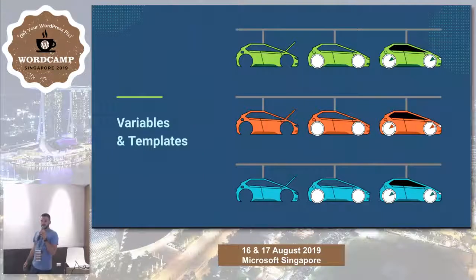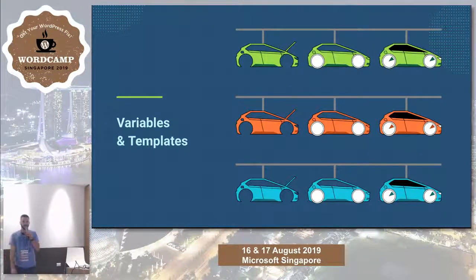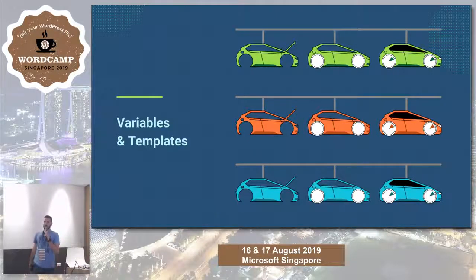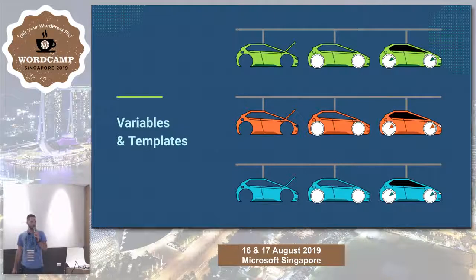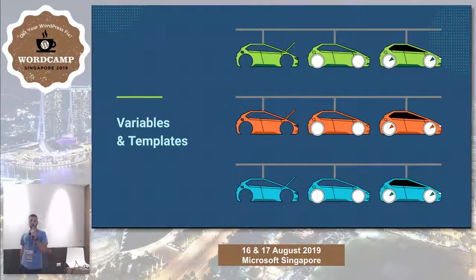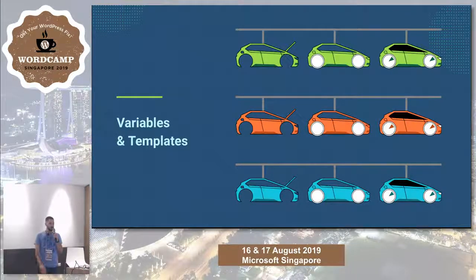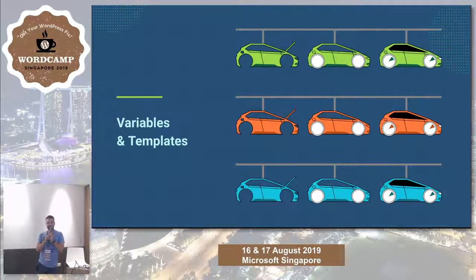All car manufacturers have different models with different colors. Similarly in the IT world, when we have 10 or 20 systems, we may want to execute the same instructions on each, but keep differences between systems — different configuration files, for example. That's how Ansible handles differences between systems: using variables and templates.